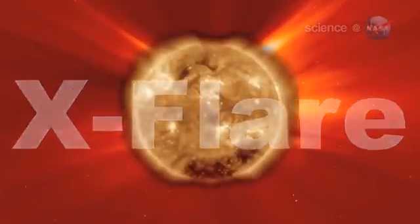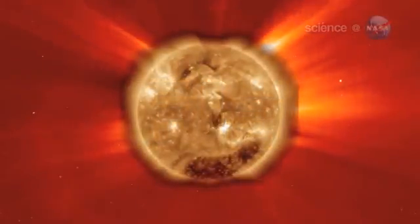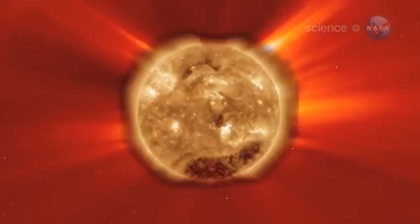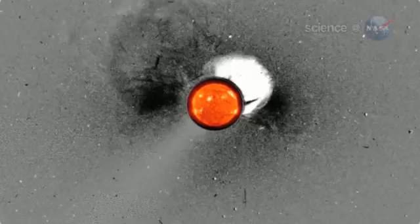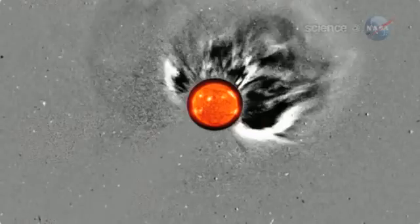In February and March, Earth-orbiting satellites detected a pair of X-flares, the brightest X-ray solar flares since 2006. Another eruption in March hurled a billion-ton cloud of plasma away from the Sun at 5 million miles per hour.